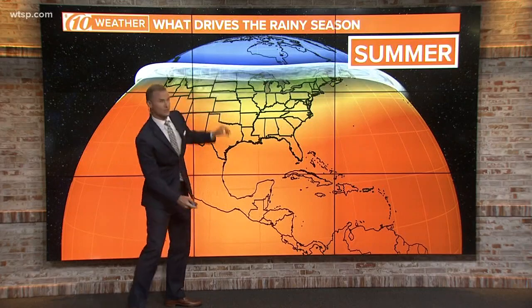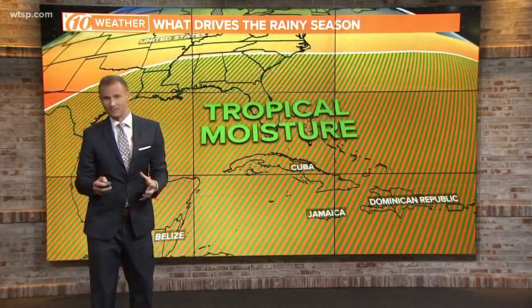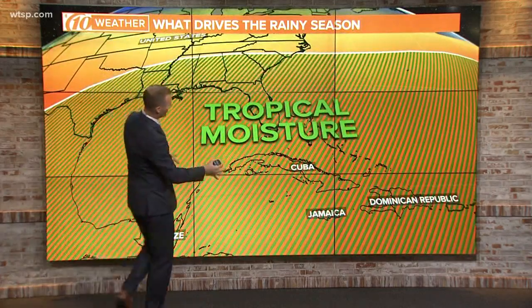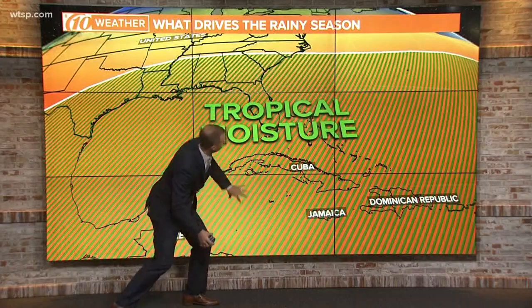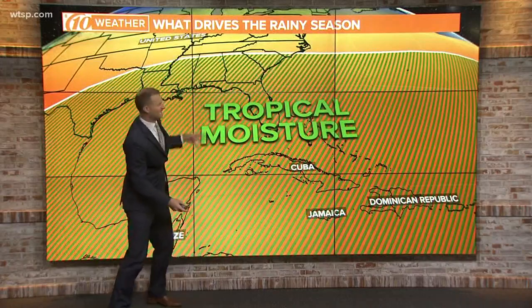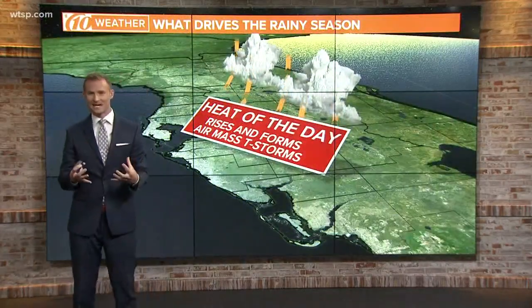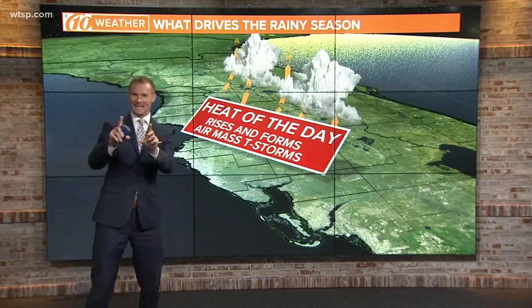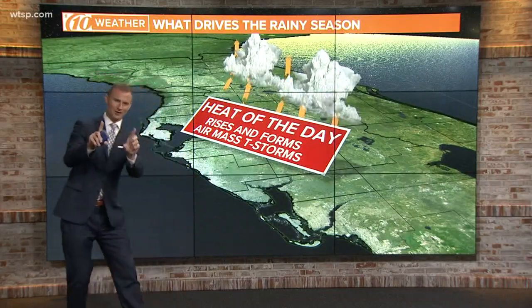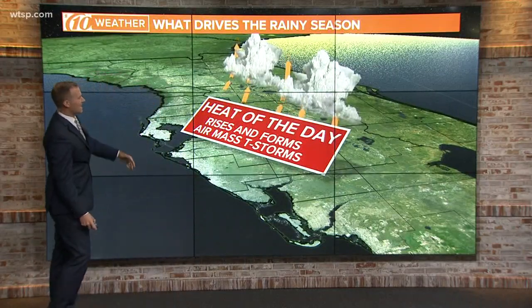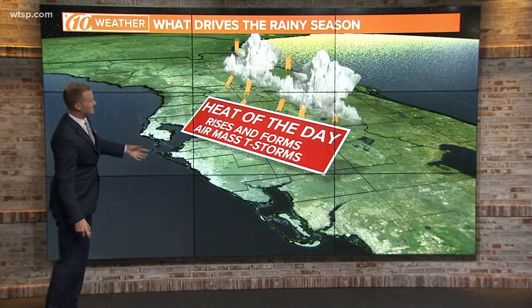In the summertime, we get more sunshine, things warm up, and the jet stream moves to the north. What's also coming up from the south is tropical moisture moving up from the Caribbean. We get really, really humid conditions — sticky conditions — a lot of moisture in the atmosphere, and that's part of the ingredient that drives our rainy season.